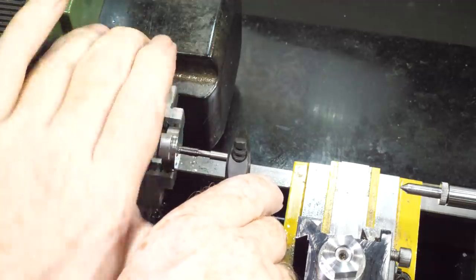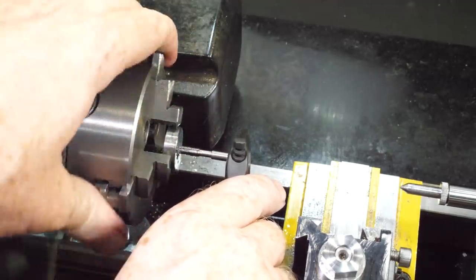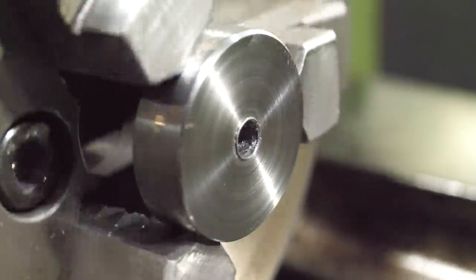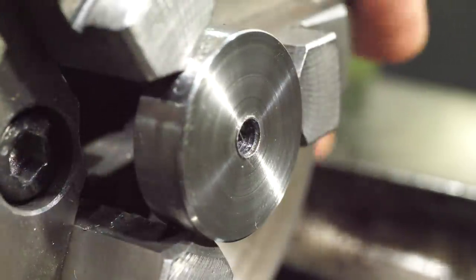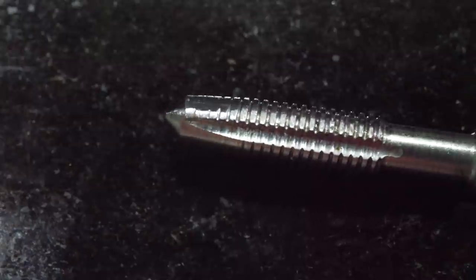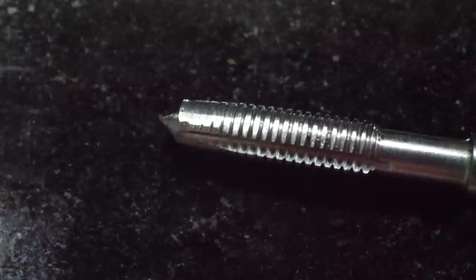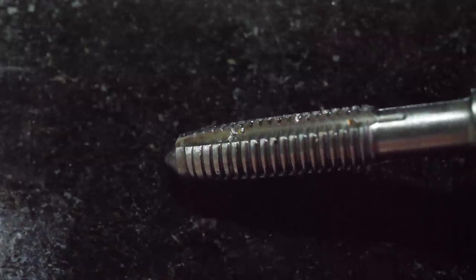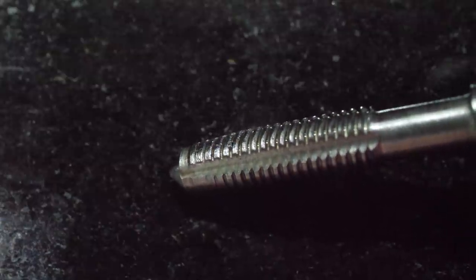Before pushing any further I wanted to check in detail how the tool was doing, so I backed the tap out and cleaned everything down for inspection. Looking at the die, the thread appears to be forming correctly and there's no sign of cross-threading. The tap itself looks okay at this point, all the cutting points look in good condition. You can clearly see the messy job I made of grinding the relief though.